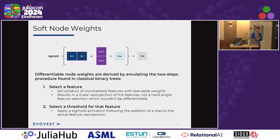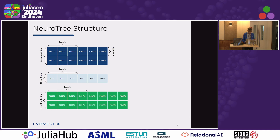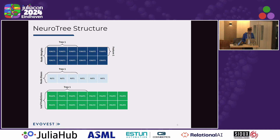There are two hard decisions in a split node. The first is to select a feature, done by the product of the dense weight times the input feature — acting as a mask over input features. The bias addition controls the second hard decision: the selection of the threshold value, which decides whether an observation goes to the left or right child. Finally, the sigmoid activation projects this into the probability domain, giving us our node weight. NeuroTree is a collection of trees; we concatenate learnable parameters — the dense-like weights, the bias, and the leaf predictions.